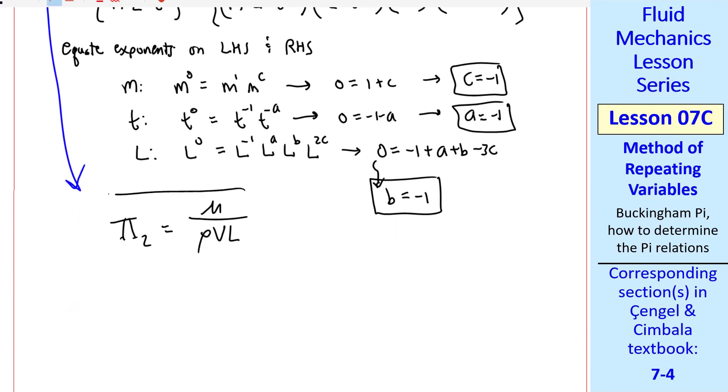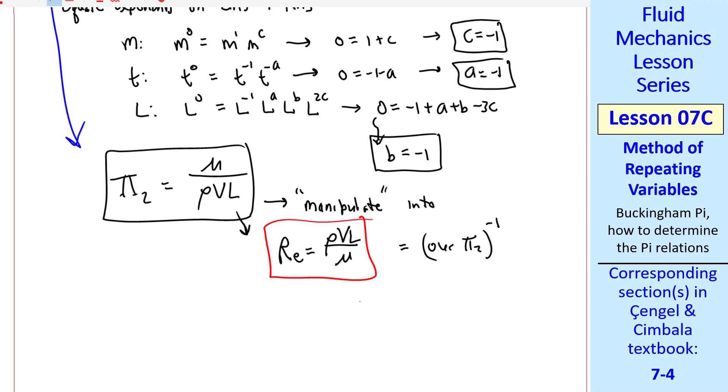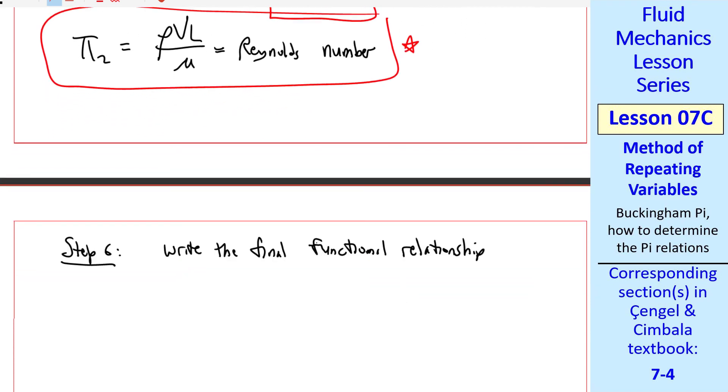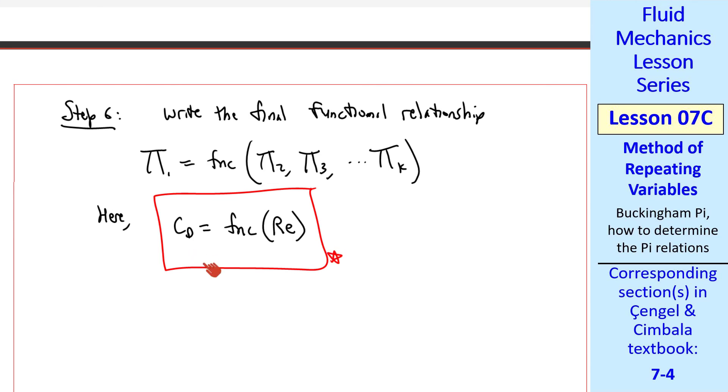Our pi two thus becomes mu over rho v l. Again, that's okay, but it's not socially acceptable. It's better to manipulate into one of the named common pis, which hopefully you can see is just the Reynolds number, which is our pi two reciprocal. Remember that we can take a pi and raise it to any exponent. Here we raised it to negative one to get Reynolds number. Many of our problems will have Reynolds number in them. So our modified pi two is a Reynolds number. Finally, step six is to write the final functional relationship in the form shown previously. Here we have only two pis, and so our final result is cd as a function of Reynolds number. Also, part of step six is to check your algebra. Just make sure these pis are dimensionless. In this case, we know that since they're listed in the table.